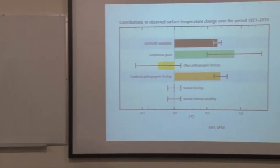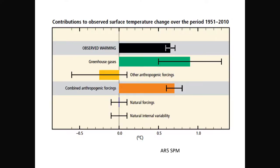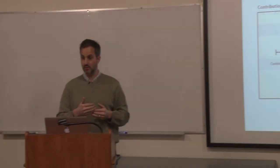As climate scientists, we can add all of these things together. We take the greenhouse gas warming and put an error bar on how certain we are. We take the other anthropogenic forcings — these particles and the clouds being created — and put an error bar on that. That error bar is larger than the one on greenhouse gases. We can add those together to get a combined forcing and try to equate that with the observed warming of the planet. The two are pretty similar — we're doing a good job of understanding climate, but there are still errors.